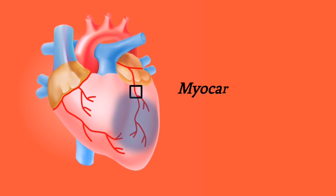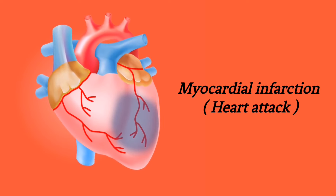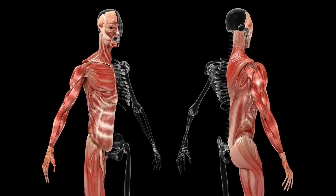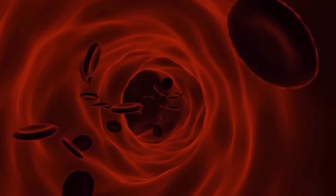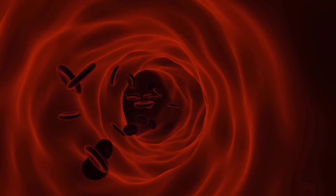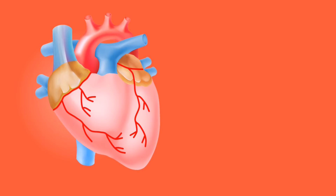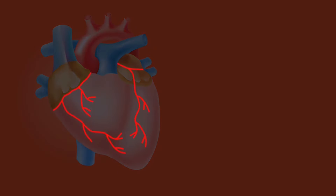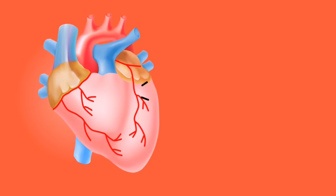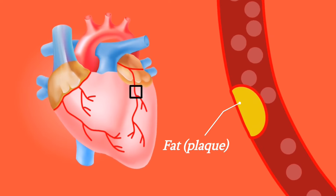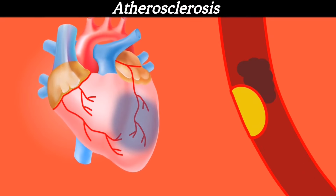One of the most common heart diseases is heart attack. Just like all the muscles in the body, the heart also needs oxygenated blood to function. A heart attack occurs when the blood flow that brings oxygen to the heart muscle is severely reduced or cut off completely. This happens when the coronary arteries that supply the heart with blood become thicker and harder from a buildup of fat, cholesterol and other substances known collectively as plaque. This process is called atherosclerosis.